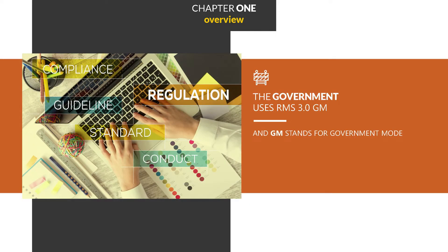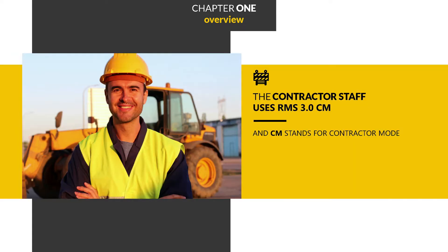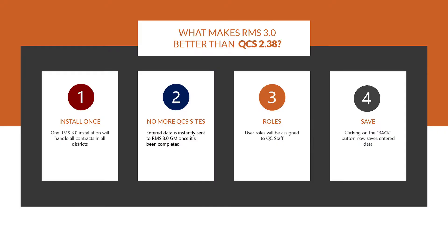RMS 3.0 GM is the government mode and RMS 3.0 CM is the contractor mode. RMS 3.0 is installed only one time on each device you use. There are no more QCS sites and user roles can be assigned to QC staff.